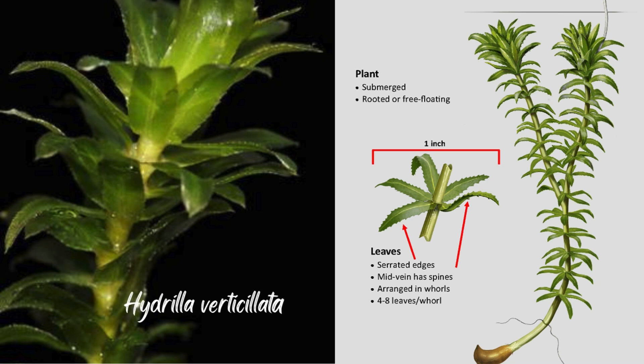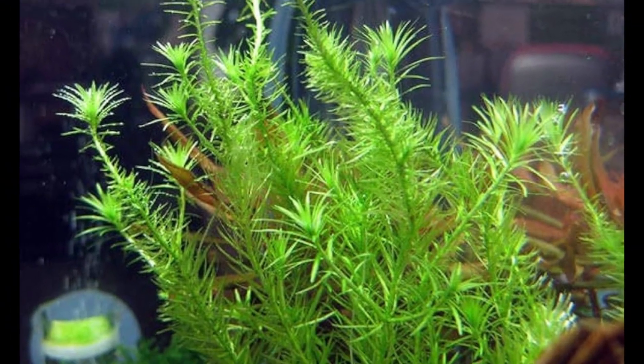Hydrilla leaves are very thin, so a minimum number of cell layers are in these leaves. Clearly, a lot of chloroplasts can be seen under light microscope at high power.